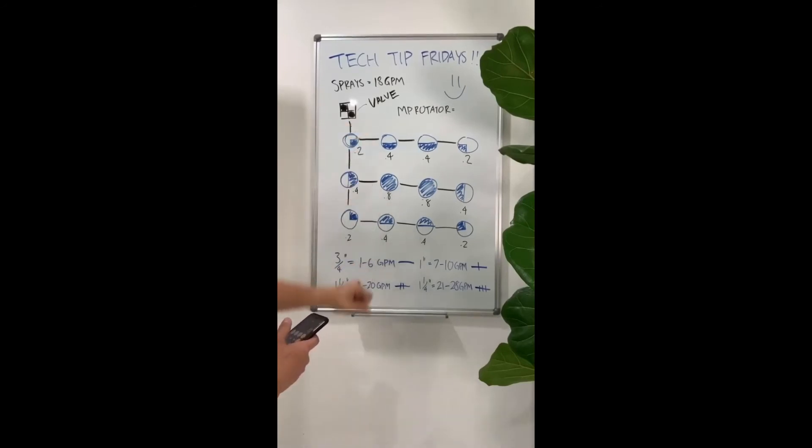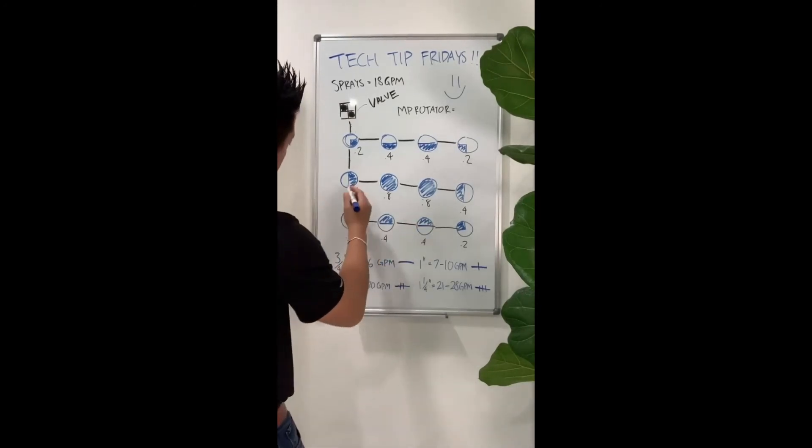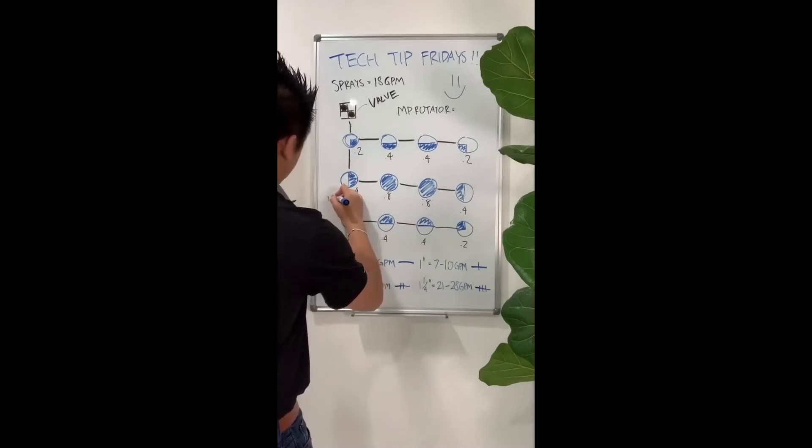And we'll do 0.2 plus 0.4 plus 0.4 plus 0.2. And you have 1.2 GPMs going through this section right here. So we'll go ahead and mark that.